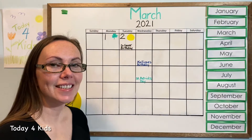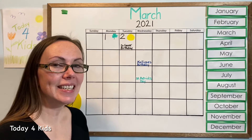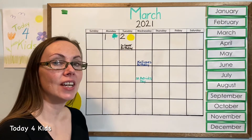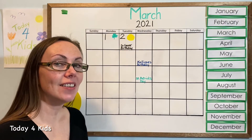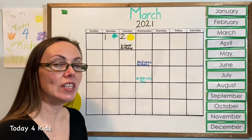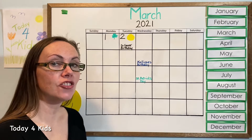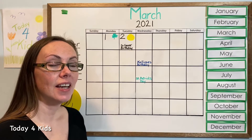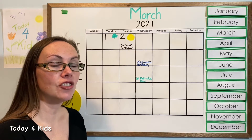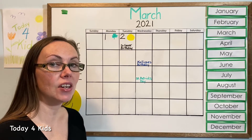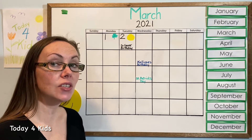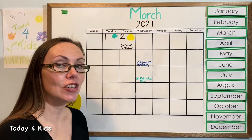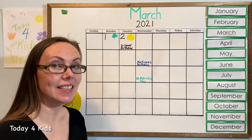Hello friends! Do you know what day it is today? Let's figure it out together. Can you look on the calendar and tell me which shape was the last shape we drew in our pattern? If we can find the last shape we drew in our pattern, then we will know what yesterday was, and that will help us to determine what today is.